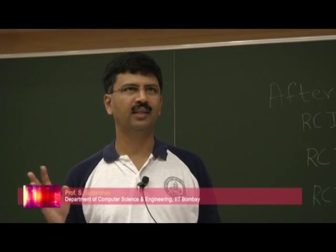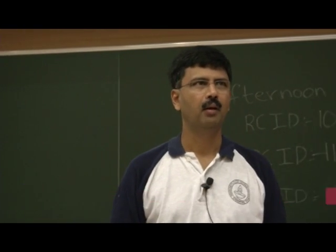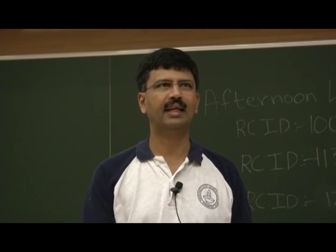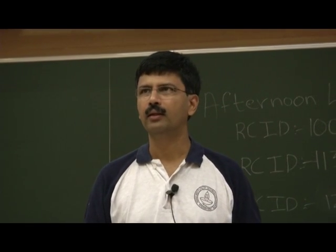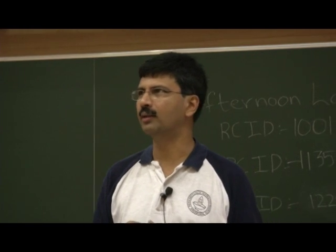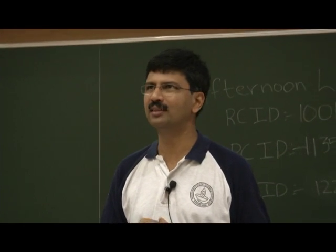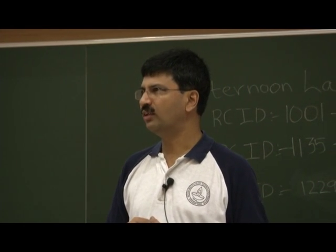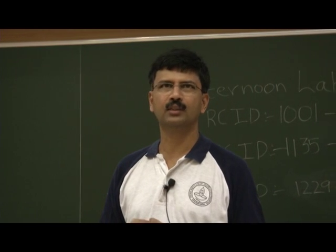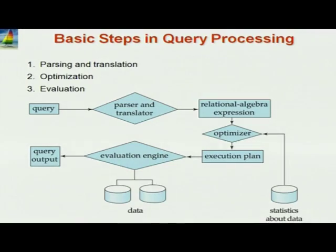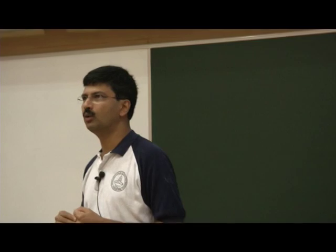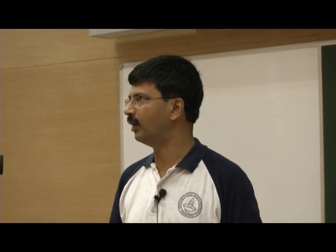Now, in the old days before relational databases, humans had to decide exactly how to execute a query. That is a lot of work for the programmer, and humans may not fully understand what is going on in the database and may choose a bad plan. One of the reasons relational databases took off is that they built an optimizer which decides the best way of evaluating a given query. You specify the query declaratively; you don't give details of how to evaluate it. The system figures out the best way.